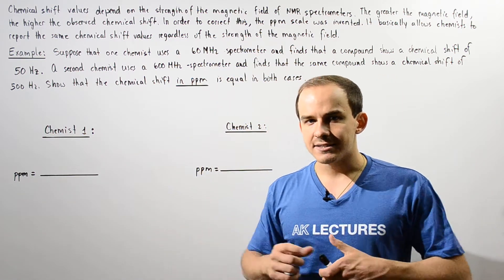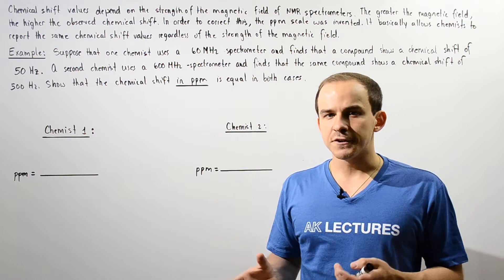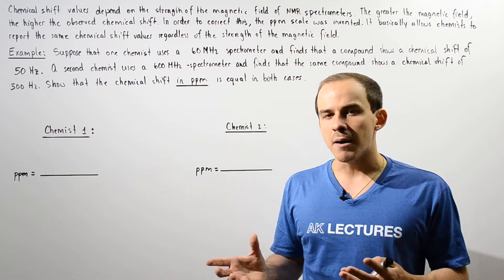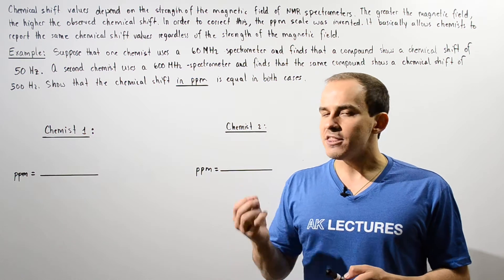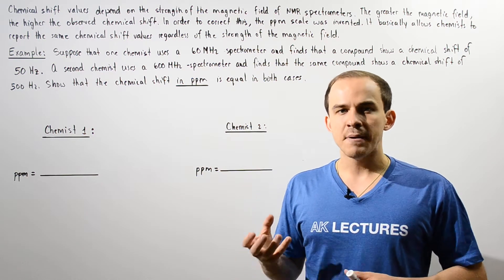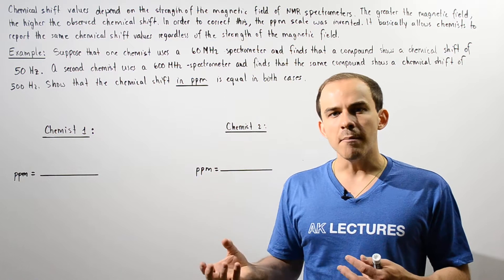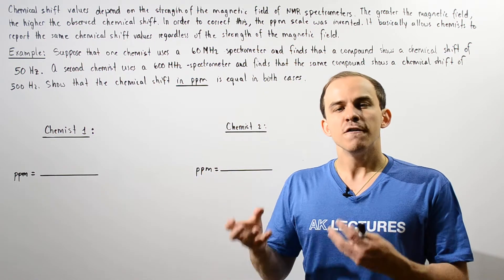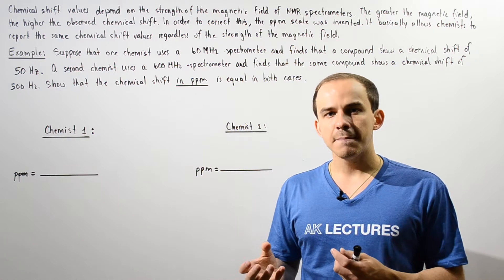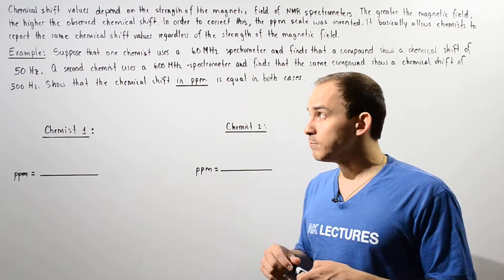If two different scientists use two different proton NMR spectrometers that have different magnetic field strengths and they use the same exact compound, those two spectrometers will give us different chemical shift values for that same compound. And this of course is a problem.